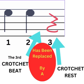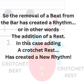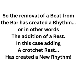In every bar the third beat was replaced by a crotchet rest. As a result, a new rhythm was created. Therefore we can create new rhythms by not only accenting beats in the bar but also by removing beats from the bar — in other words, by adding a rest to wherever we wanted. In this case a crotchet rest was added to the position of the third beat.